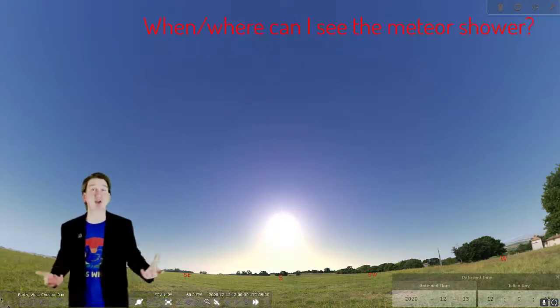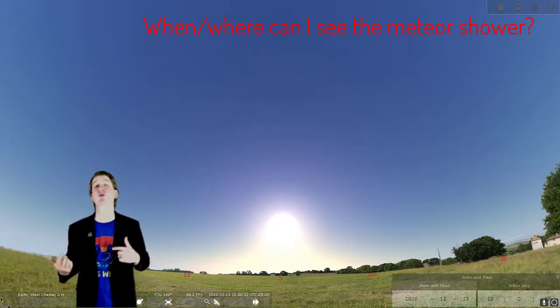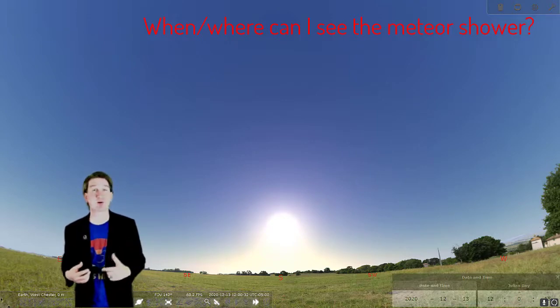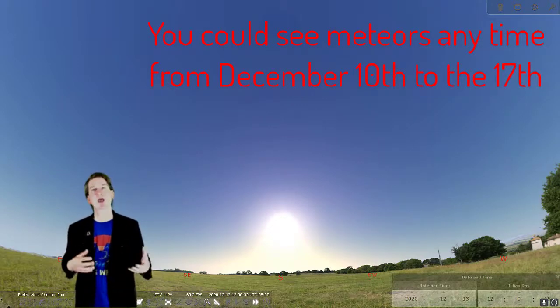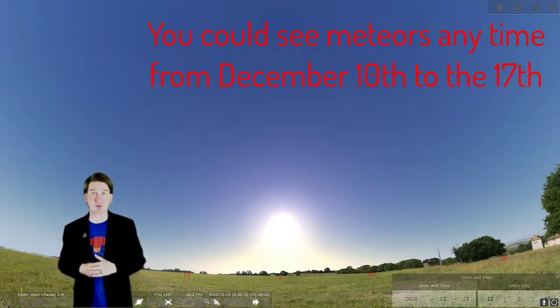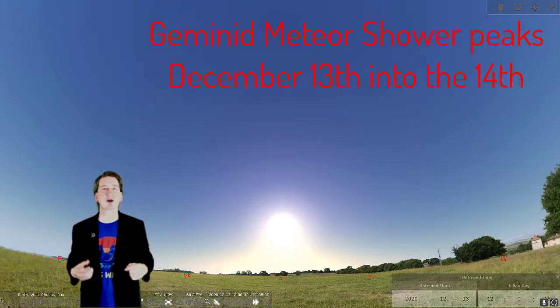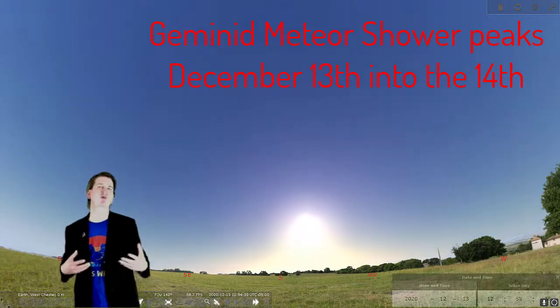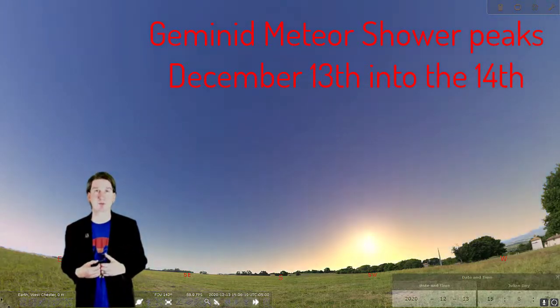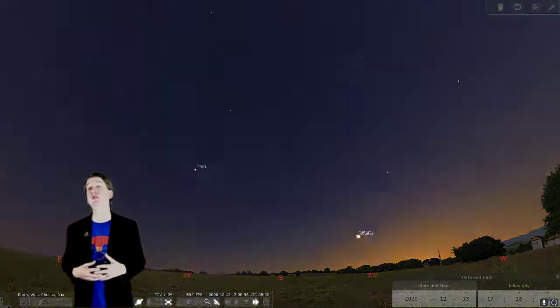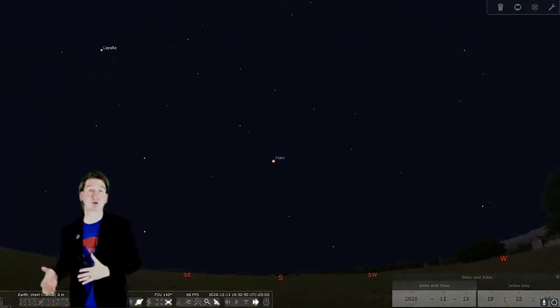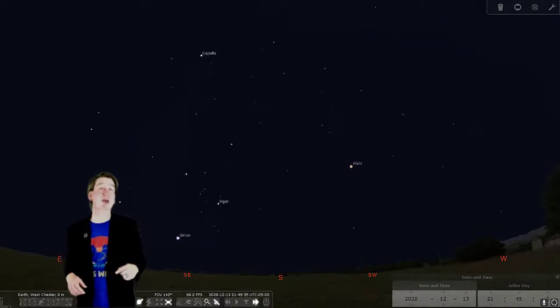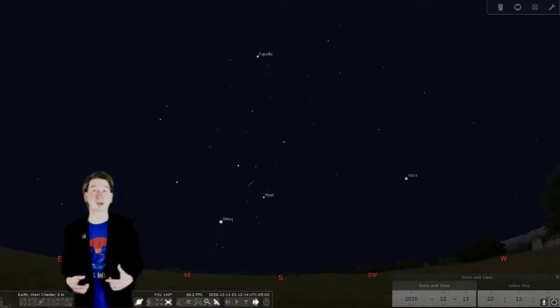When and where can I see the Geminid meteor shower? The Earth will be moving through the orbit of asteroid 3200 Phaethon from about the 10th of December until the 17th, and you may catch some of the meteors on any of those nights. But the night that we go through the largest concentration of debris will happen around the 13th and 14th of the month. The best night to go out will be on the evening of the 13th into the morning of the 14th.